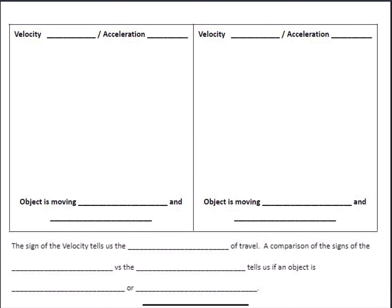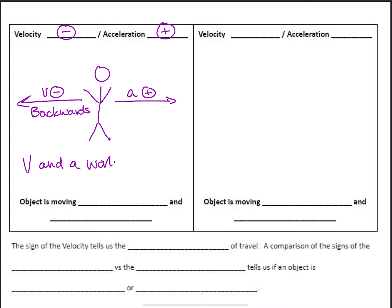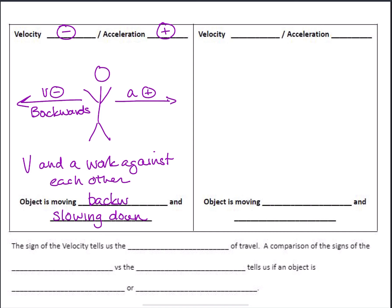What if instead we move backwards — negative velocity — and the acceleration is positive? Because of that negative velocity, you're moving backwards, but your acceleration is forward. So again, velocity and acceleration work against each other. By seeing those opposing signs, I know the object is slowing down, and because velocity is negative, I also know it's moving backwards.